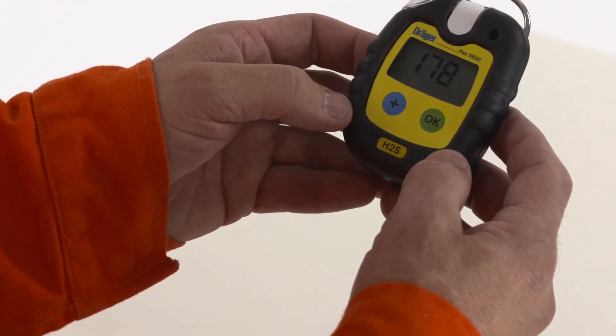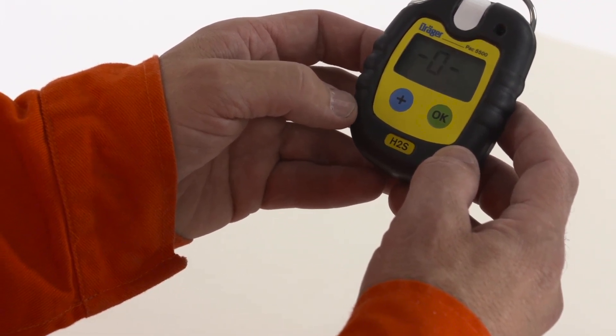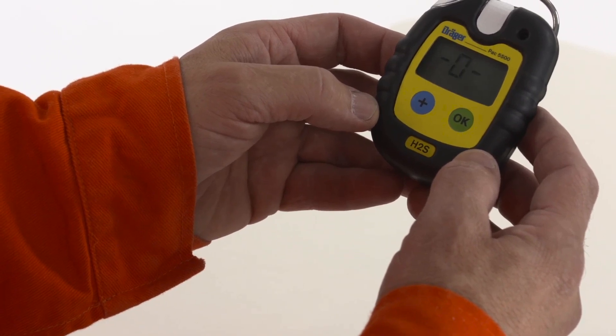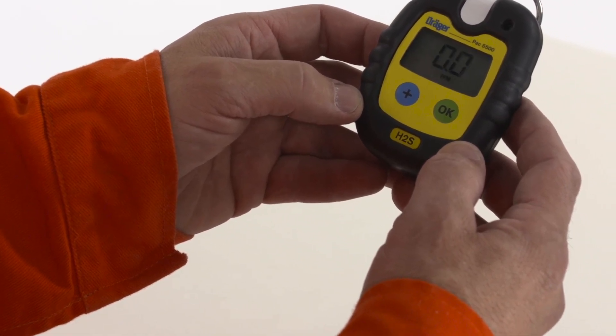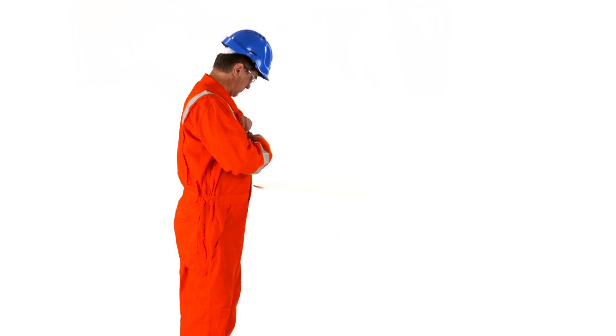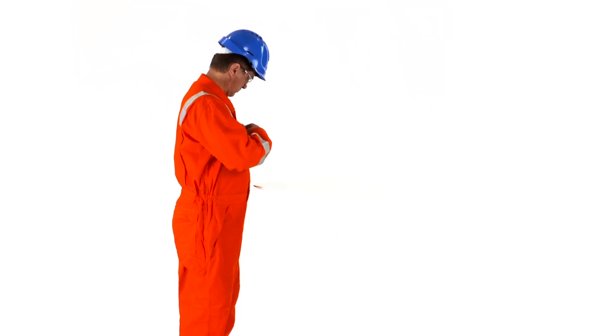Upon completion of the apparatus self-check, the actual measurement will be shown in the display. Find a visible place on your coverall and mount the detector. It is important to mount the detector where you can both hear and see the alarm signals clearly.